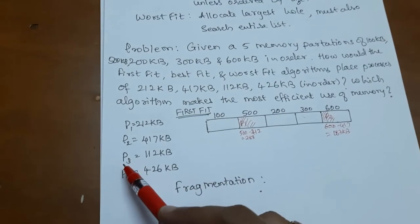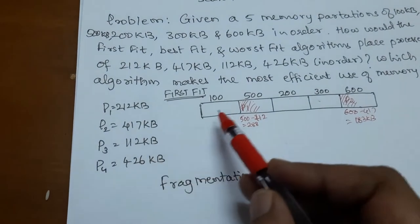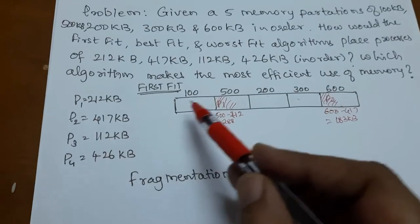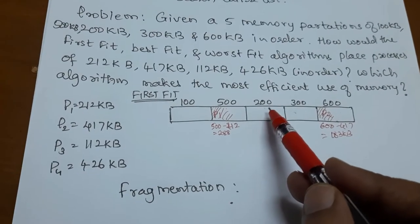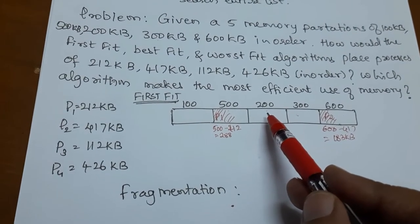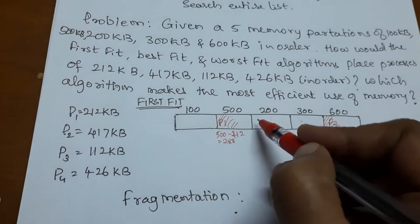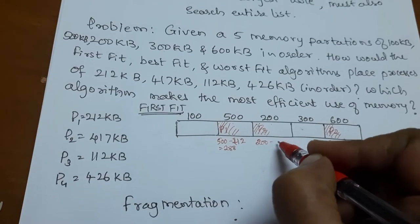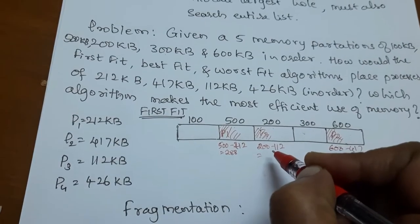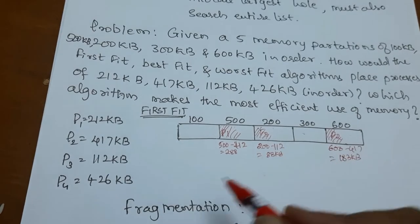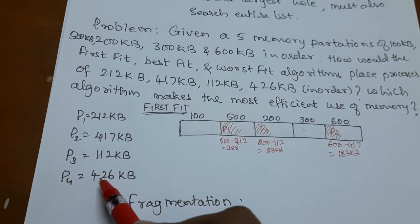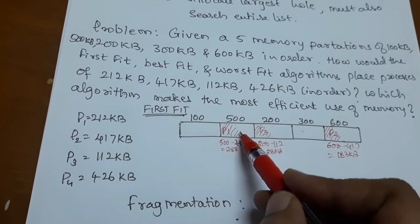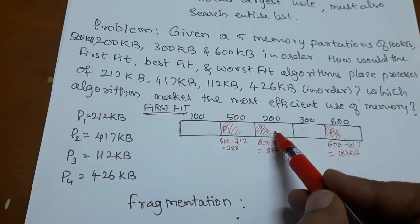The next incoming process is P3 of size 112 KB. The first partition is 100 KB, which is not enough, so it goes to the next free memory slot of 200 KB. As it is big enough to hold P3, it is allocated to this block with leftover memory of 200 minus 112, equal to 88 KB. The next incoming process is P4 of size 426 KB — the first partition is not suitable.